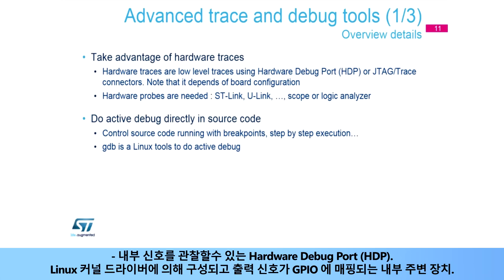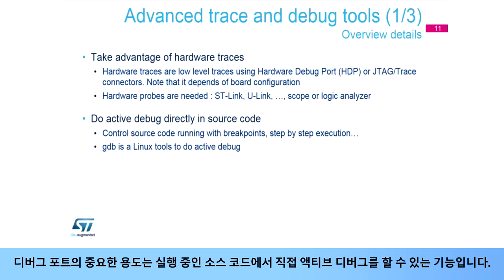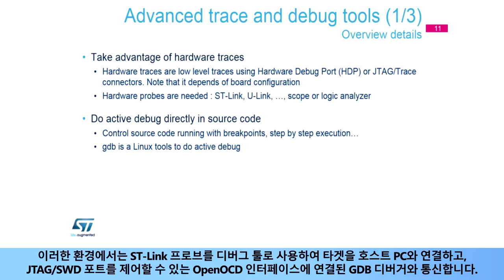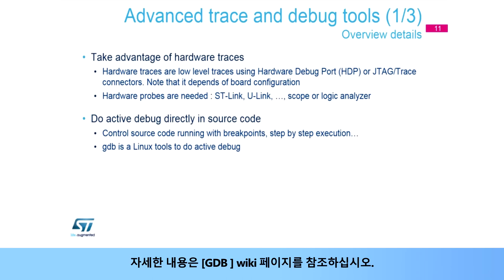A Hardware Debug Port (HDP) allows the observation of internal signals. This is an internal peripheral configured by a Linux kernel driver, for which output signals are mapped on GPIO. An important usage of this debug port is the possibility to do active debug directly on the running source code. It is possible to manage software execution by adding breakpoints, performing step-by-step execution, and tracing variables. For this environment, use the ST-Link probe to connect the target to the host PC, and use the GDB debugger interface linked to OpenOCD interface, which enables control of the JTAG/SWD port. For more detail, refer to the GDB wiki page.